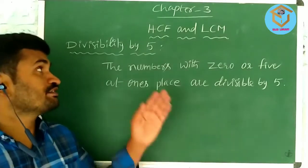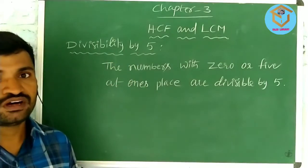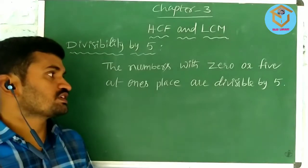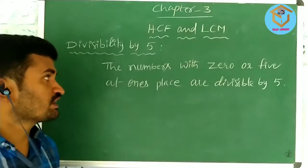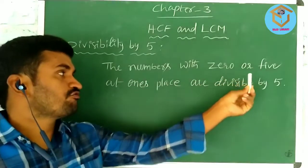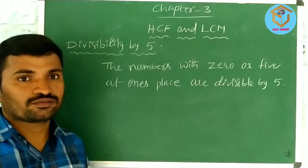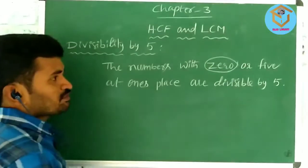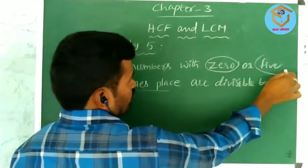Let us see divisibility by 5. What is divisibility by 5? The numbers with 0 or 5 at the 1's place are divisible by 5. Look at the board — the numbers must have 0 or 5 at the 1's place.